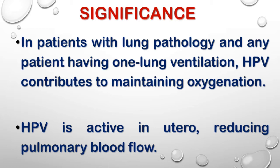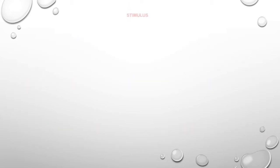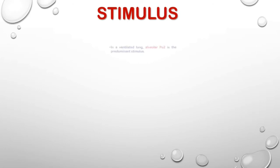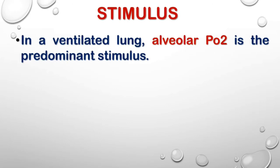Now coming to the stimulus for HPV: in a ventilated lung, alveolar PO2 is the predominant stimulus, meaning the low oxygen level in the alveolus is sensed by the vasculature supplying that area, leading to vasoconstriction of that area.